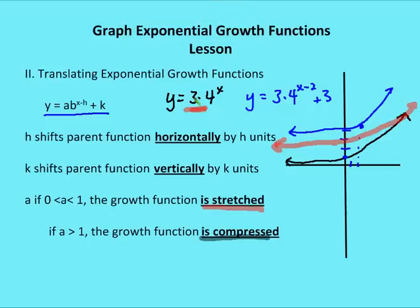If the value of a is greater than one, we compress the graph — it accelerates at a greater rate and reaches designated y values quicker than it otherwise would. So compressing accelerates the curve, while stretching — when a is between zero and one — elongates the curve.